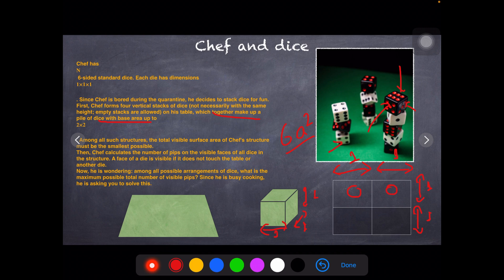Among all the structures, Chef calculates the number of pips on the visible faces. After you stack up with the minimum surface area, Chef finds the pips. What are pips? Pips are basically the dots that are there in each of the dice. As you can see: ek, do, tin, char - four pips are there, the holes basically.